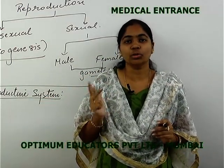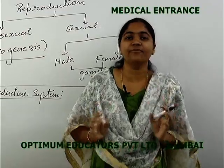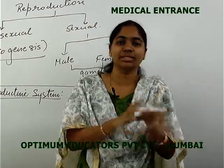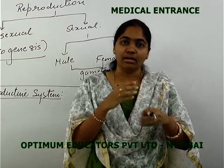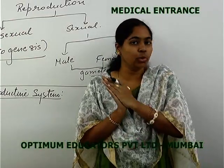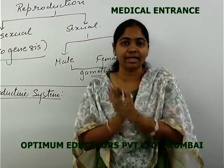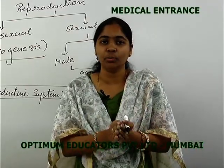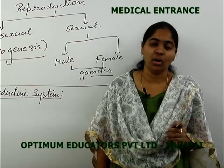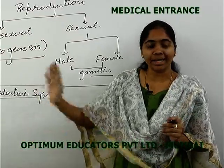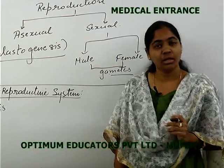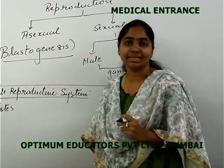Secondary organs are those which are only accessory in function — secreting certain juices, chemicals, or enzymes aiding the process. They do not secrete hormones and have no direct role in gametogenesis. The major primary organ of the male reproductive system is the testes, present in the scrotal sac.